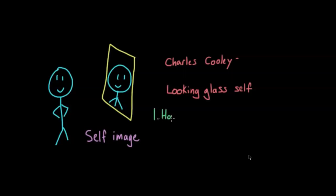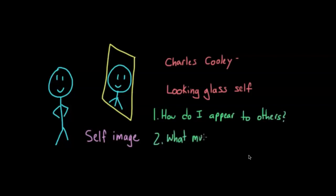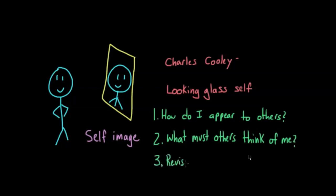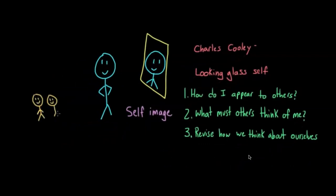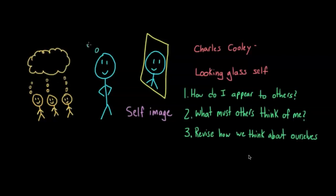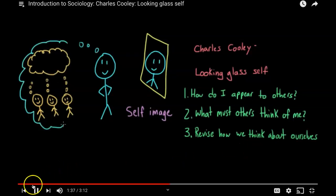Cooley theorized that our view of ourselves comes not only from direct contemplation of our personal qualities, but also from our perceptions of how we are being perceived by others. He thought this happened through three steps: first, we imagine how we must appear to others; second, we imagine how they evaluate us — as intelligent, funny, shy, or awkward; and third, we develop feelings about ourselves based on our impressions of their evaluations. Critically, Cooley believed we are influenced not by actual opinions of others, but by what we imagine those opinions to be.